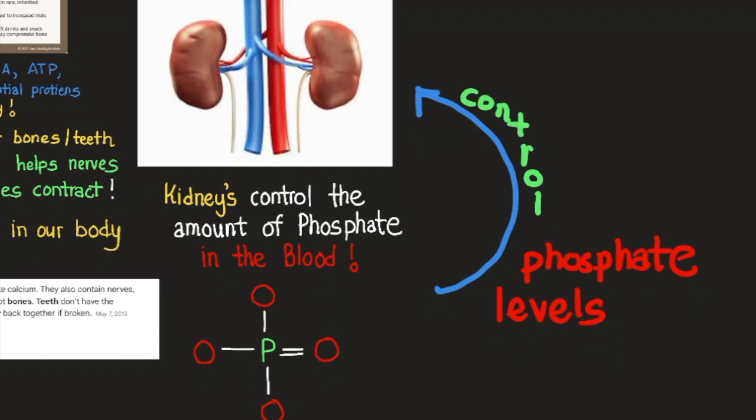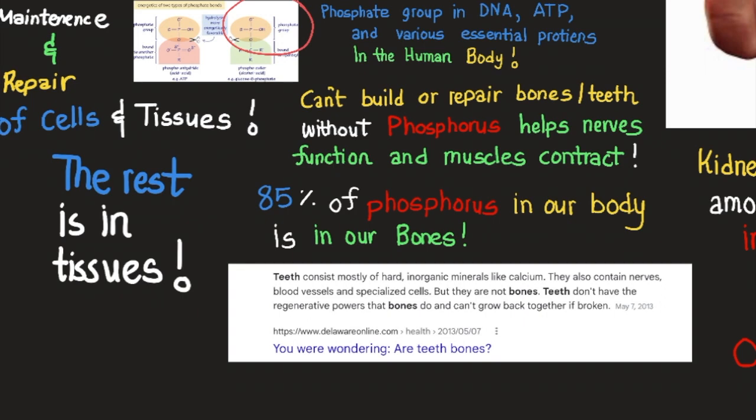Each individual is different and varies based on activities, food consumption, and overall experience throughout their lifetimes. Phosphate groups are in DNA, ATP, and various essential proteins in the human body — also in the phospholipid bilayer. Phosphates are excreted because they're used for so many components and processes in the body. If we use phosphorus in order to move, then eventually some of that phosphorus ends up outside of the body.